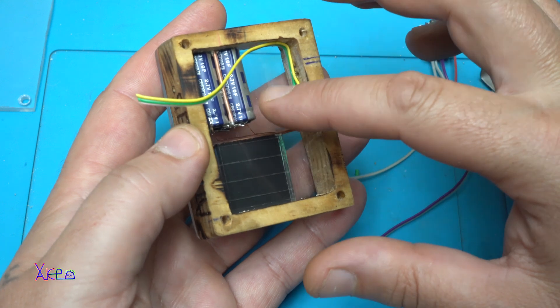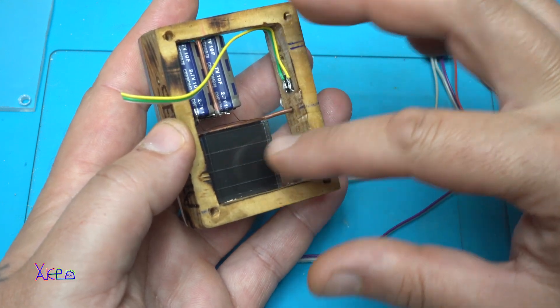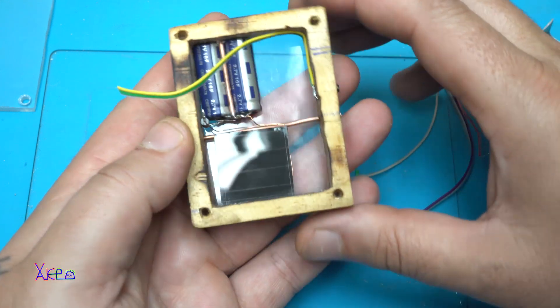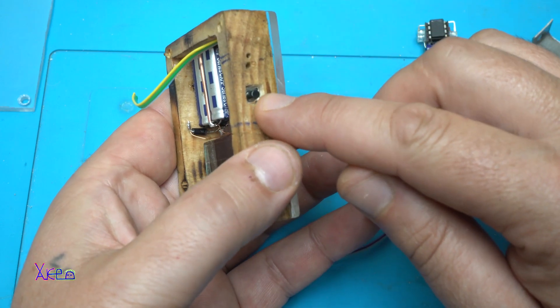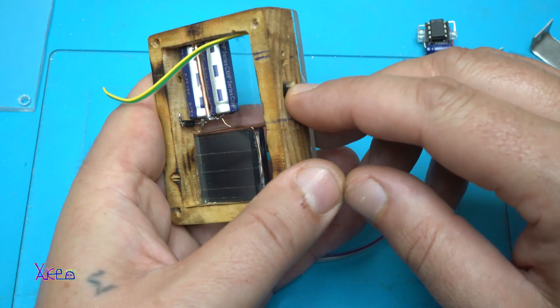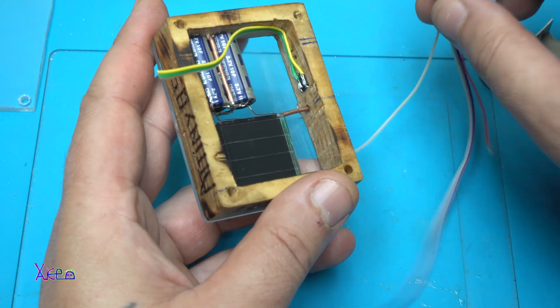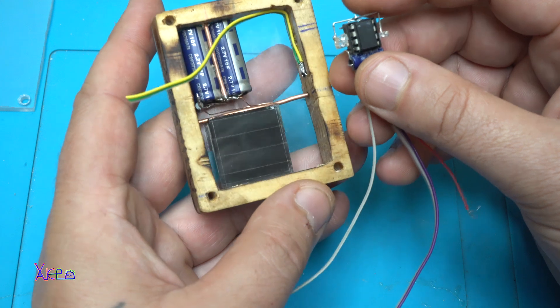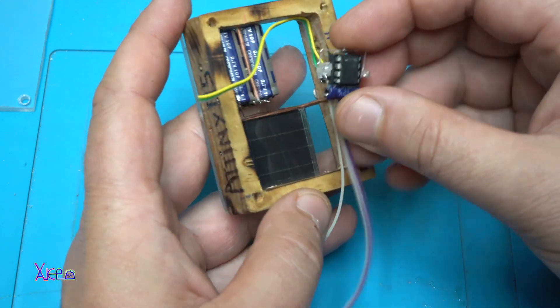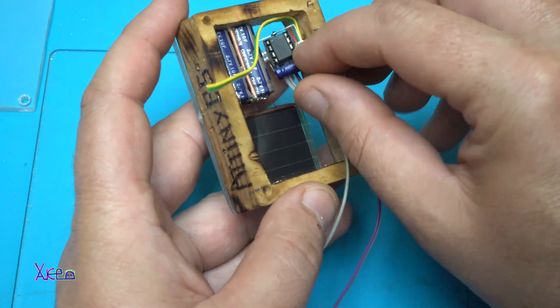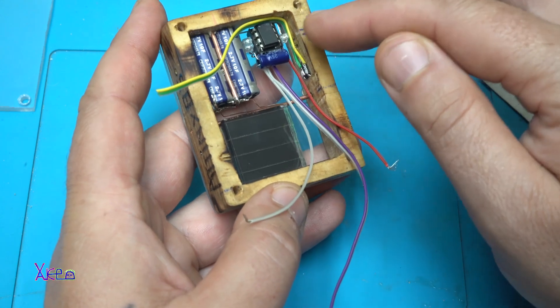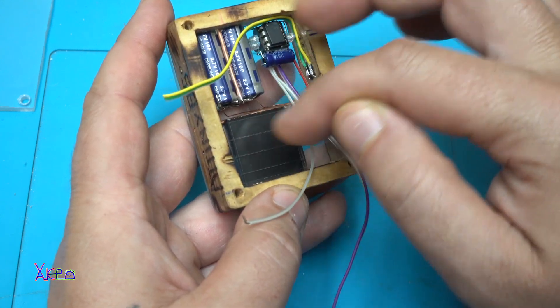As you can see, so far I have added the super capacitors and the solar panel and also on the side there is a reset push button that needs to be connected with these two wires on the main chip. And now I'm gonna place the chip inside and make all the soldering wires.